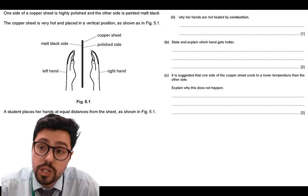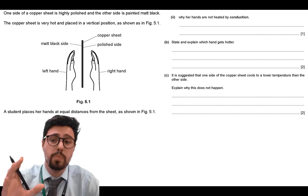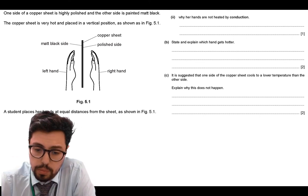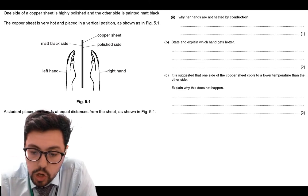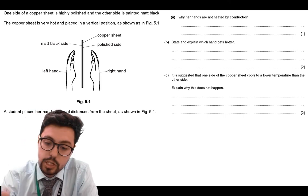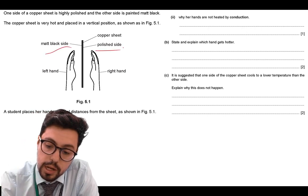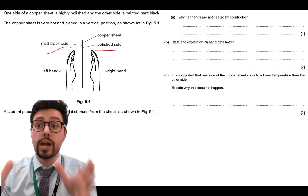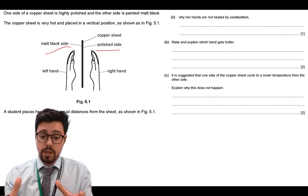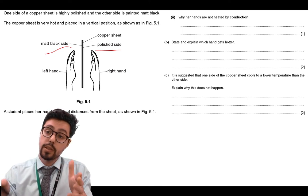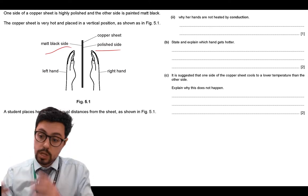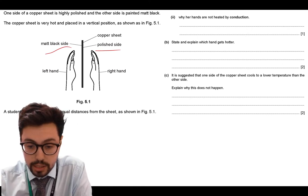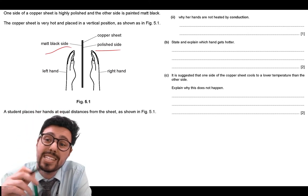Time for question number four — a year nine topic: our thermal topics, our heating topics. We've got a copper sheet painted two different colours, with two hands on either side. The copper sheet is really hot and we're trying to feel the temperature difference between both sides. Part one is explaining why the hands are not heated by conduction.